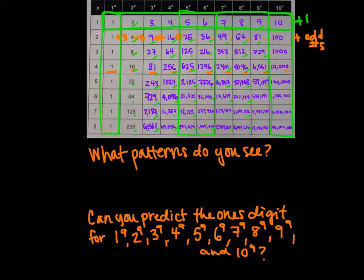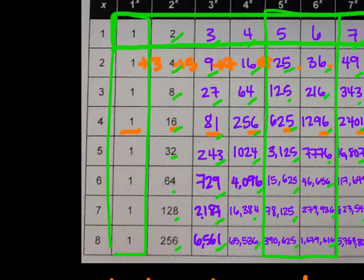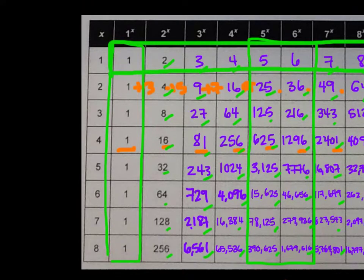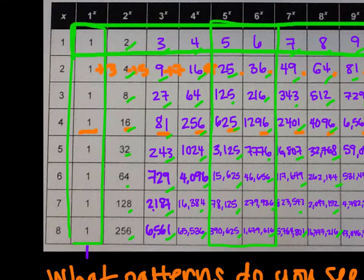Now the question is: can we predict the ones digit for each base raised to the 9th power? For 1 to the 9th, it's probably going to be 1. For 2 to the 9th, following the cycle 2, 4, 8, 6, repeating, the 9th term would be a 2. Putting 2 to the 9th into a calculator gives 512, which ends in 2 — that's kind of cool.